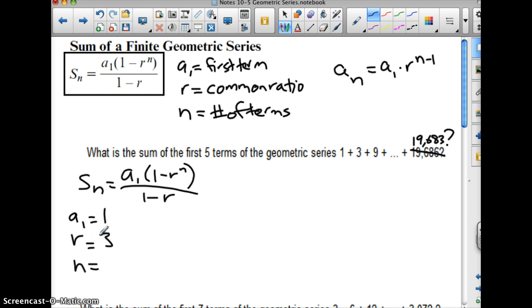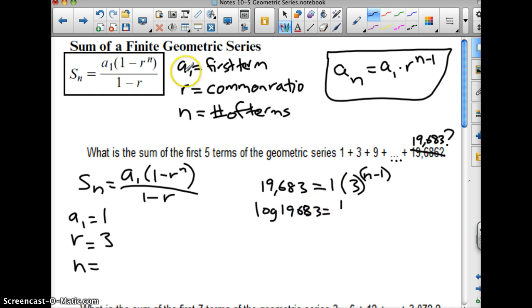n is a little bit more difficult here, because I've got this dot dot dot. I don't really know how many terms there are in the series. However, if I take advantage of this formula, I know the last term is 19,683, and that needs to equal the first term times 3 to the n minus 1 power. So I can take the log of both sides here.